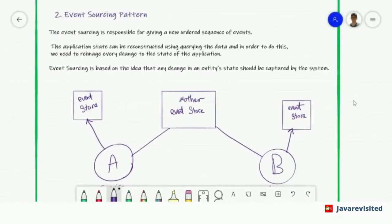The second pattern is event sourcing pattern. The event sourcing pattern is responsible for giving a new ordered sequence of events. Application state can be reconstructed using query the data. In order to do this, you need to record every change to the state of application. Event sourcing is based on the idea that any change in an entity state should be captured by the system.